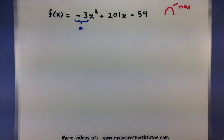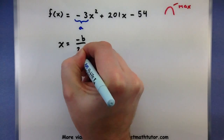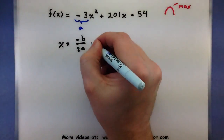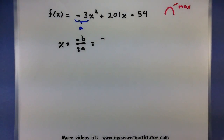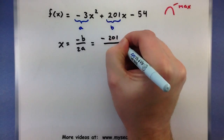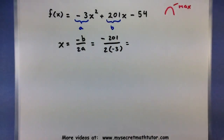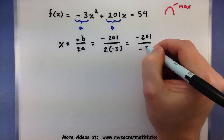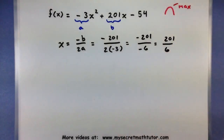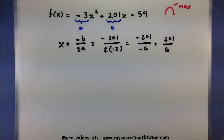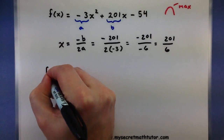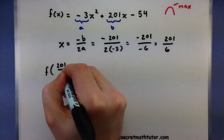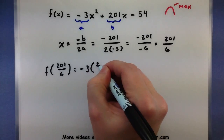Now we use our formula x equals negative b over 2a to figure out where this maximum occurs. The value of b is 201, so we get negative 201 all over 2 times negative 3. That gives us negative 201 all over negative 6, or simply 201 over 6. This one doesn't simplify further, but that's okay. Now all we have to do is take this and plug it into our function. Everywhere we see an x, we put in 201 over 6.